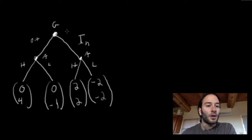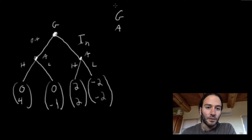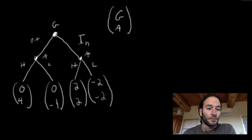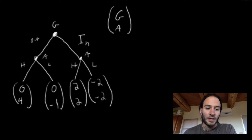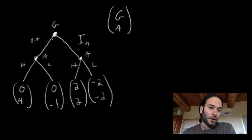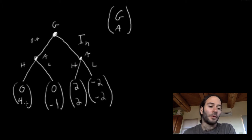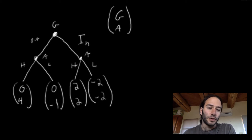Suppose Google plays in — I'll redraw this up here, Google is always the top payoff. If Google enters the market, would Apple want two or negative two? Of course it would want two, so if Google plays in we would imagine Apple would choose the high pricing strategy. If Google plays out, would Apple want four or negative one? It would want four — higher is always better. So no matter what Google does, Apple would most likely choose the high price.